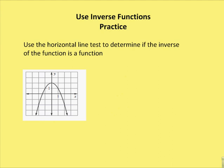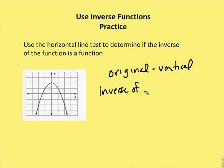Now we use a horizontal line test to determine if the inverse of a function is itself a function. For the original function, we use the vertical line test. For the inverse of a function, we use the horizontal line test. The original function passes the vertical line test, but when I draw a horizontal line, it passes through two points on the graph, so the inverse is not a function.